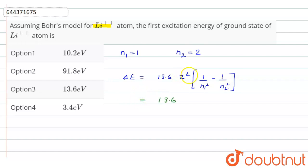Now value of n1 is 1, value of n2 is 2. So from here if you solve this, what we get?